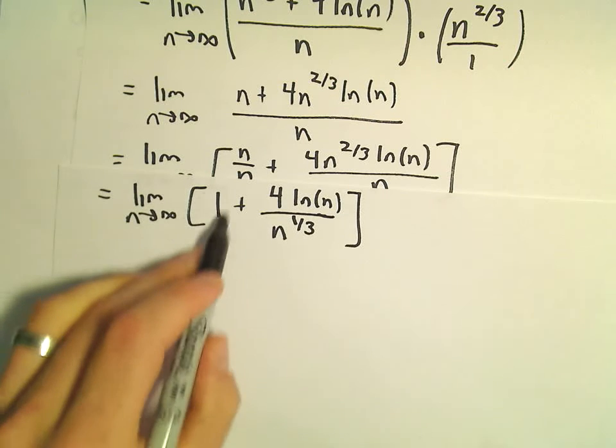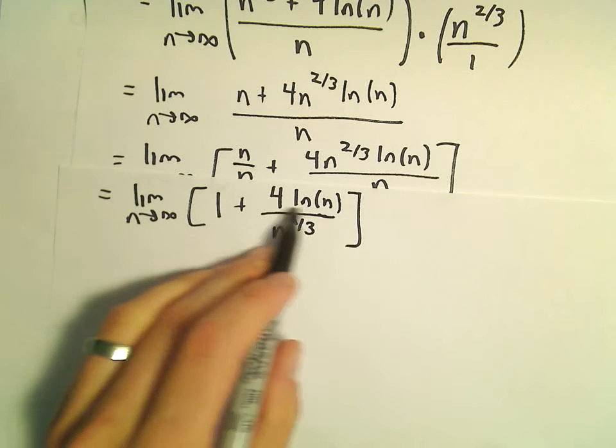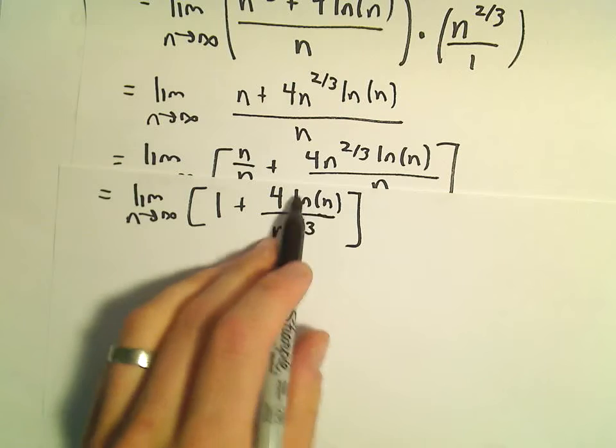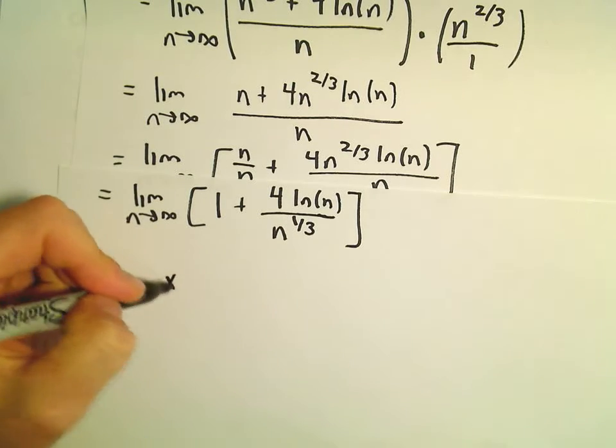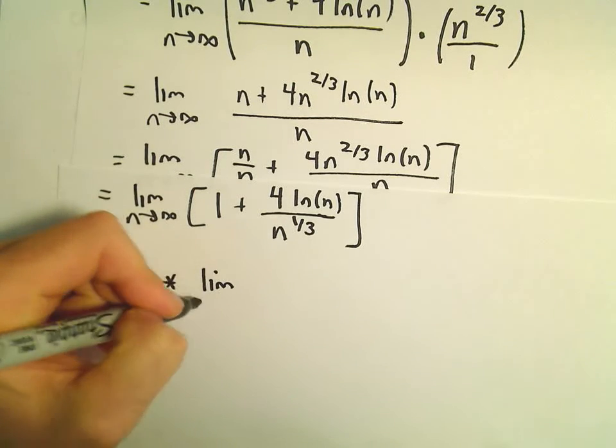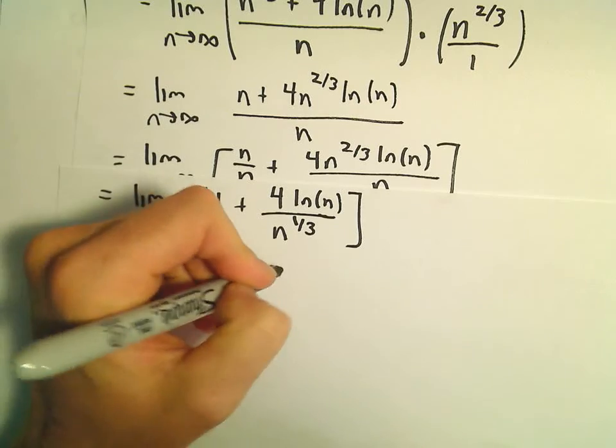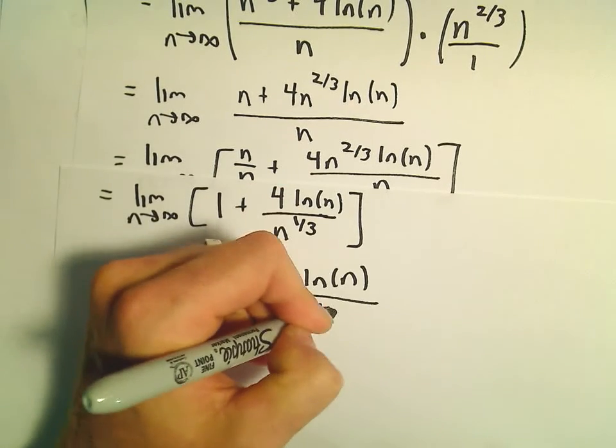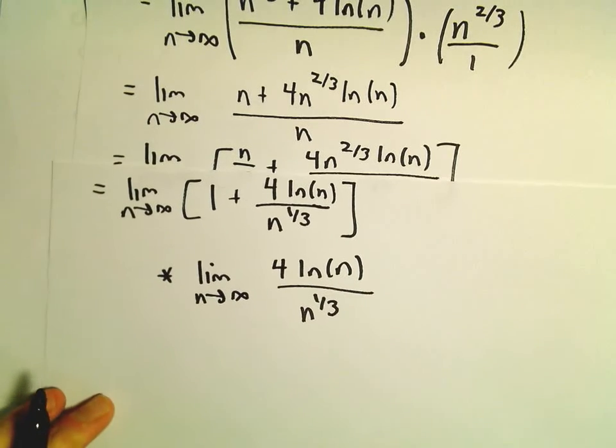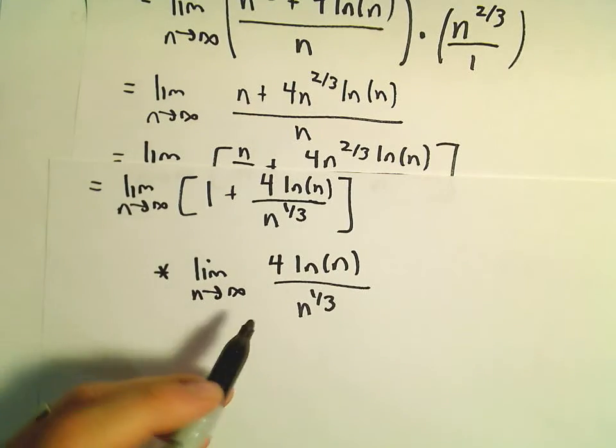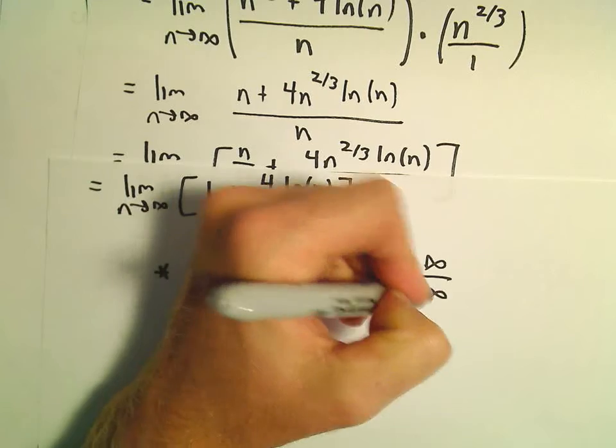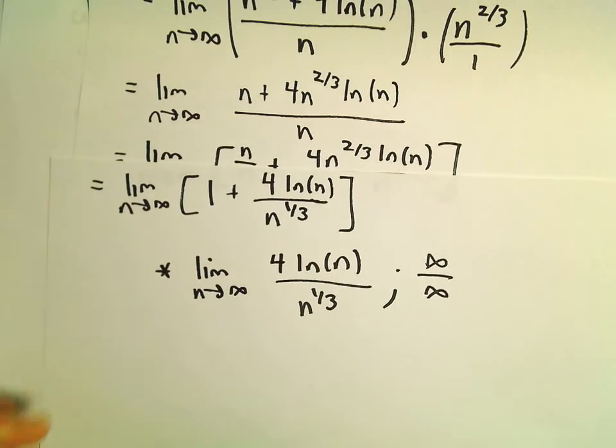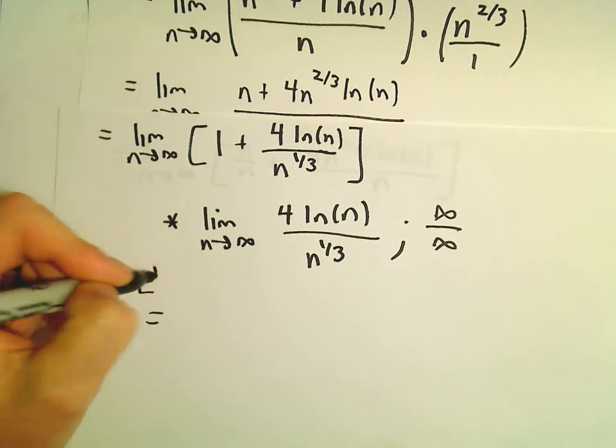Okay, so as n goes to infinity, 1 simply goes to 1. But our second limit will have infinity over infinity. So kind of off to the side, I'm just going to look at the limit as n goes to infinity of 4 ln of n over n to the 1/3 power. Well, we can always evaluate this using L'Hopital's rule. Again, we have our indeterminate form, infinity over infinity. So if we use L'Hopital's rule,